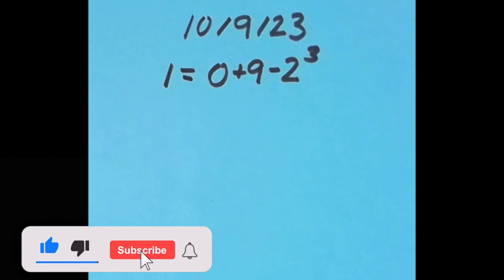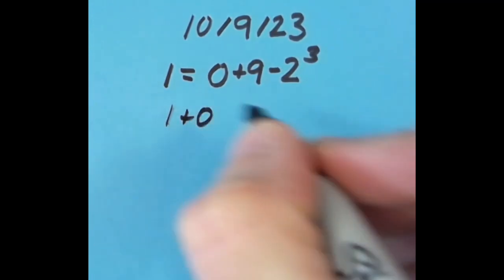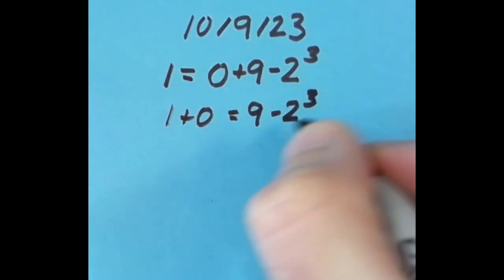But I did try it some other ways with the equal sign in different spots just for fun. Here I said let's do 1 plus 0 to get 1, and then again, 9 minus 2 to the third power. So again, it's 9 minus 8, which is 1, so that also works.